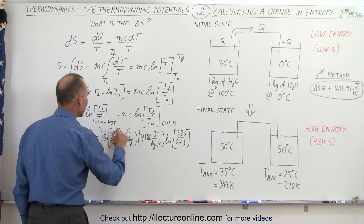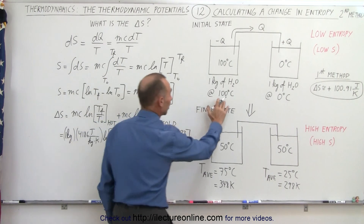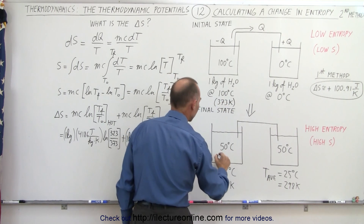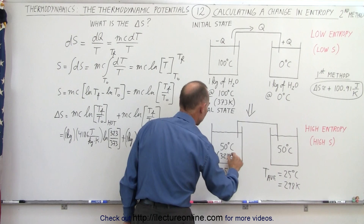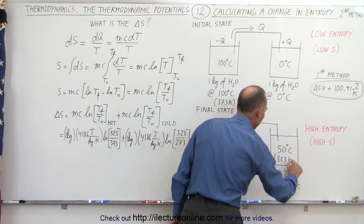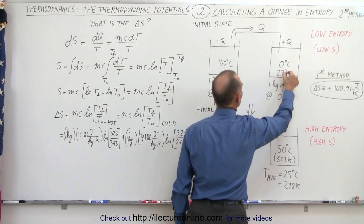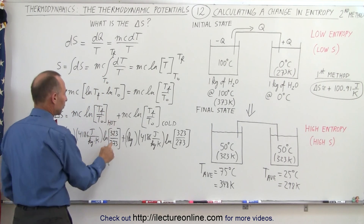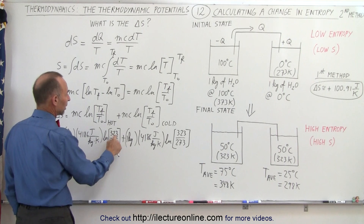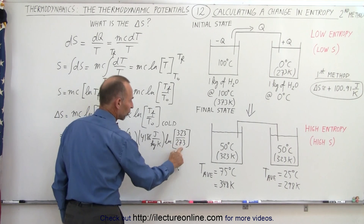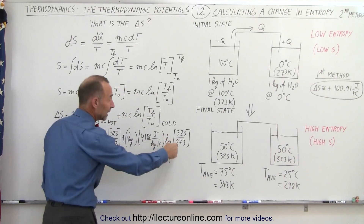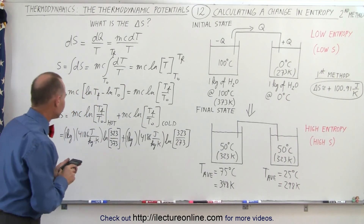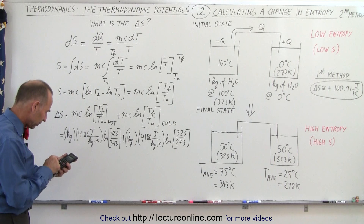The final temperature is 323 K. Let's confirm: 100 degrees centigrade is 373 kelvin, 50 degrees centigrade is 323 kelvin, and 0 degrees centigrade is 273 kelvin. So for the hot reservoir we start at 373 K and end at 323 K; for the cold reservoir we start at 273 K and end at 323 K — an increase of 50 and a decrease of 50.